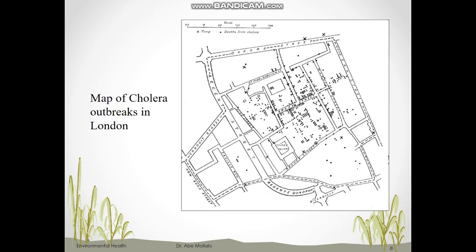This is the map of the location of deaths because of cholera and the location of the pumps. You can see that most of the deaths occurred around the Broadway Street pump.